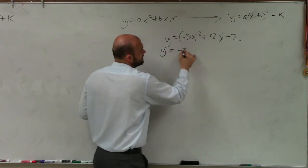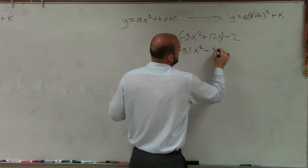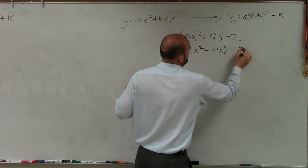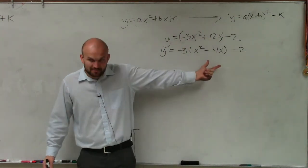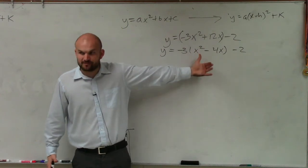Therefore, y equals negative 3x squared minus 4x minus 2. Now, within these parentheses, I'm going to want to create my perfect square trinomial.